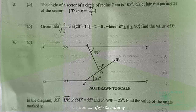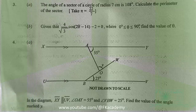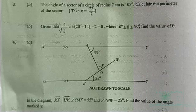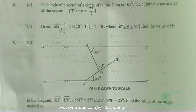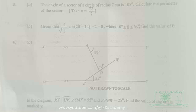Question 4: In the diagram, line segment XY is parallel to line segment UV. Angle OAY = 55° and angle VBW = 25°. Find the value of the angle marked Y. Do not rush to write Y + 55° = 180° and say they are co-interior angles — the line BW is not parallel to line XY.